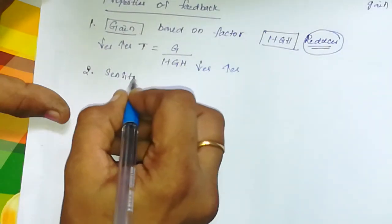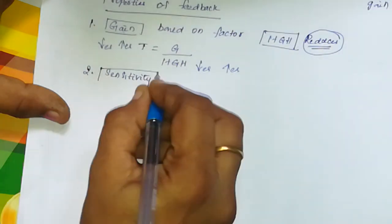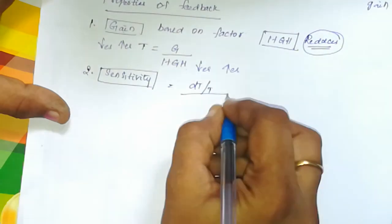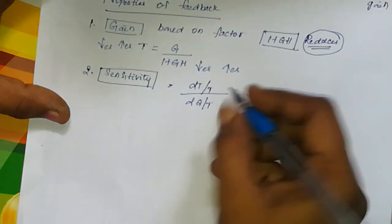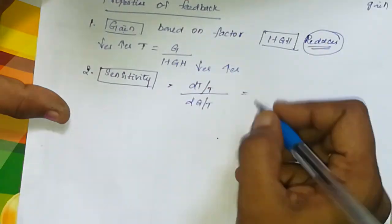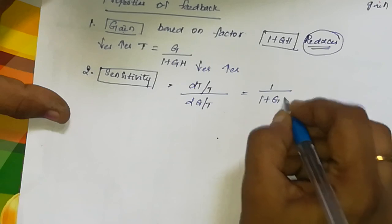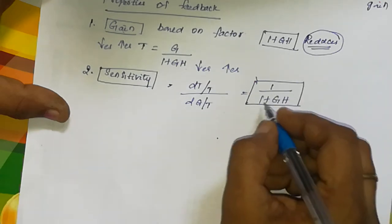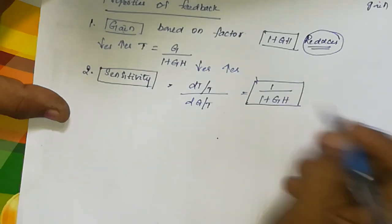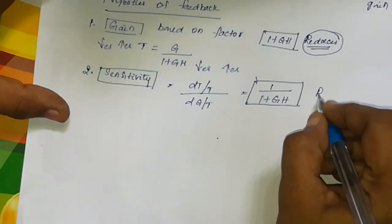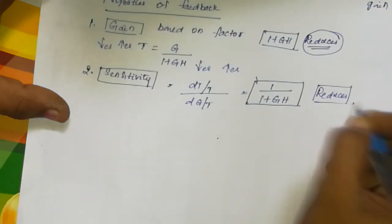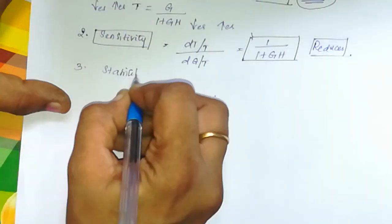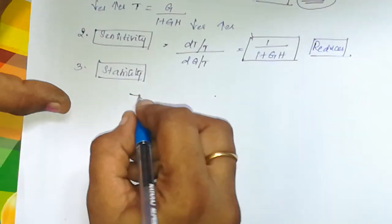The second property is sensitivity. The sensitivity formula involves change in overall gain divided by change in open-loop gain. Due to feedback, sensitivity reduces or decreases by the factor one divided by one plus G H.